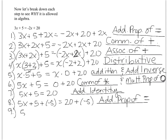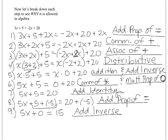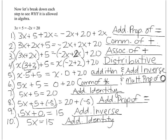Step nine: 5x plus 0 equals 15. What changed is I added 5 and negative 5 to get 0. That is the additive inverse. Step ten: 5x equals 15. I added 5x plus 0 to get 5x. That is the additive identity property, because whenever you add 0 to something, you get the same thing back.